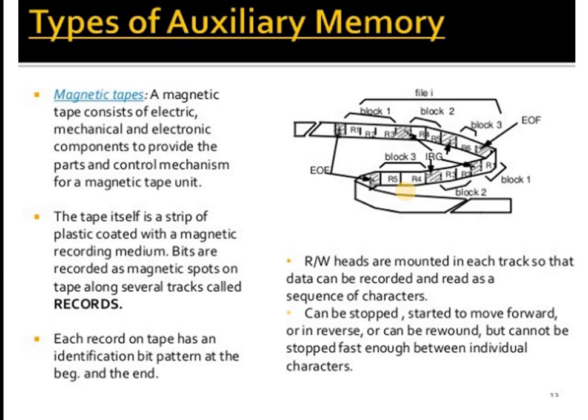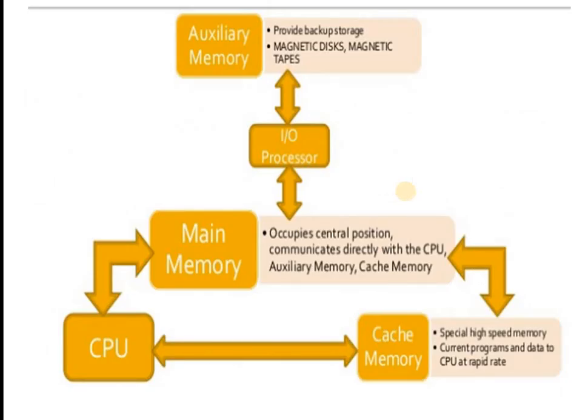Another type is magnetic tape. In older days, we would listen to songs through cassettes — plastic tapes inserted into an audio system. Magnetic tapes store data sequentially and are another form of auxiliary memory.